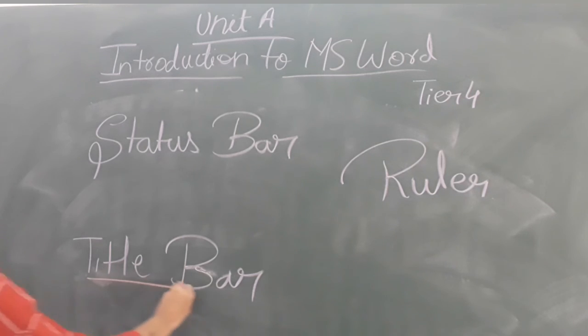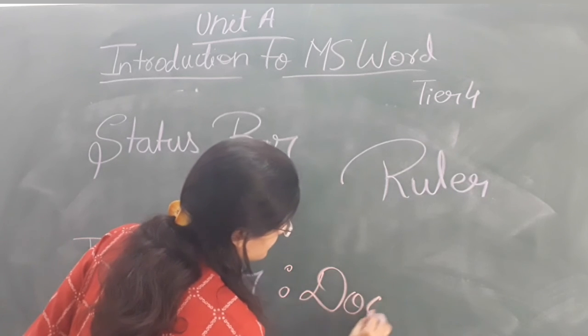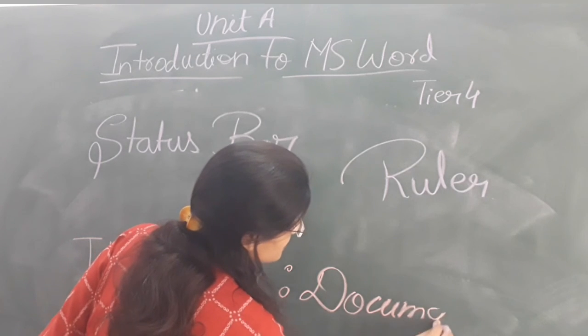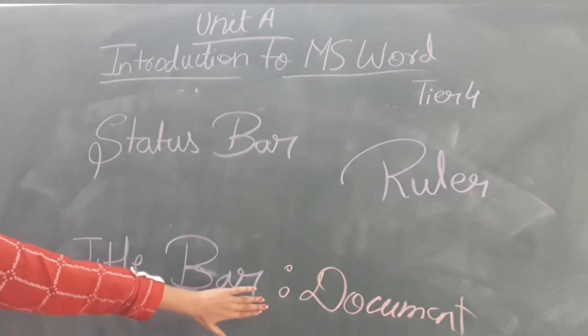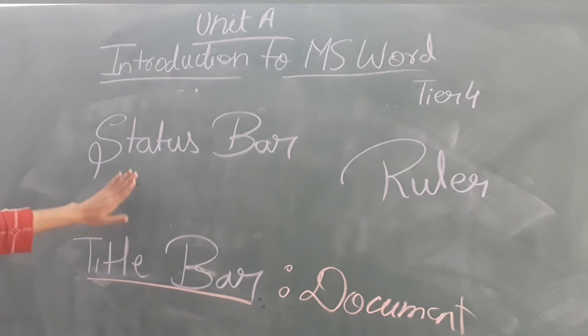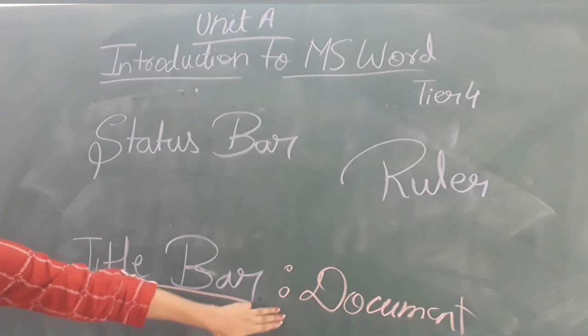Now this is the, next is the Title Bar. Title Bar always displays the name of the file. Suppose you have written the name of the file as Document. So the name of the file is just Document. And whenever you will be working on the MS Word screen, the title will be displayed on the upper side of the screen with the name whatever you have saved.